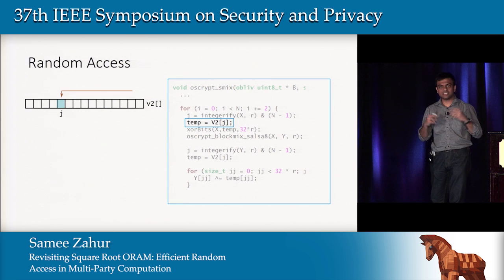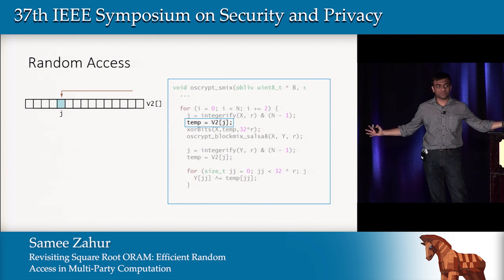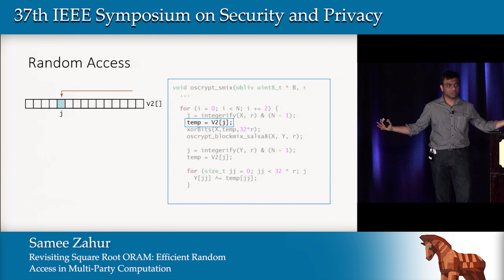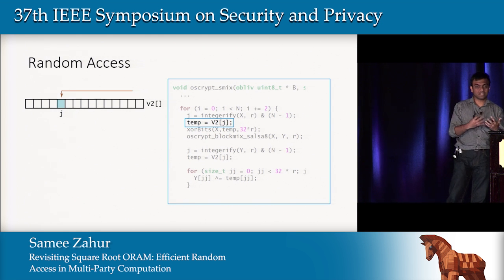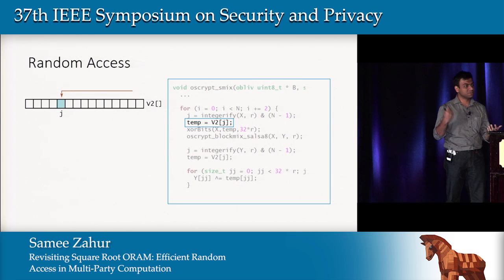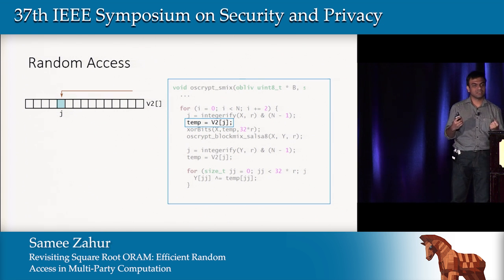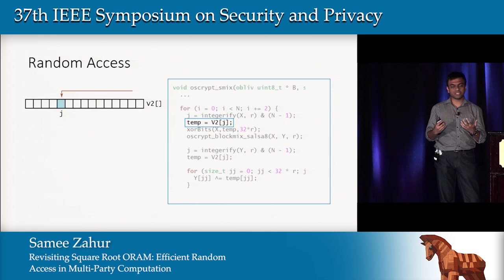Let's say you have a program and somewhere you make an access — you need to access element 5. The data themselves can be encrypted all you want, but both parties will be able to see you're accessing element 5. If that index somehow depends on secret data you didn't want to reveal, that's an intermediate result you're leaking.